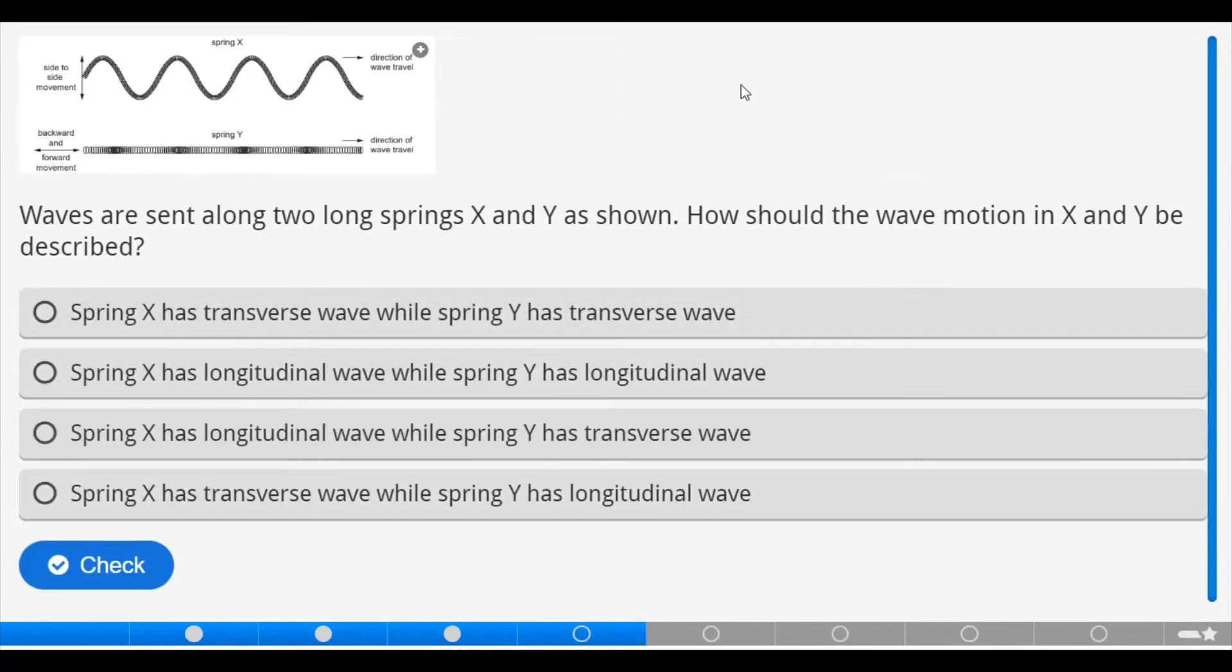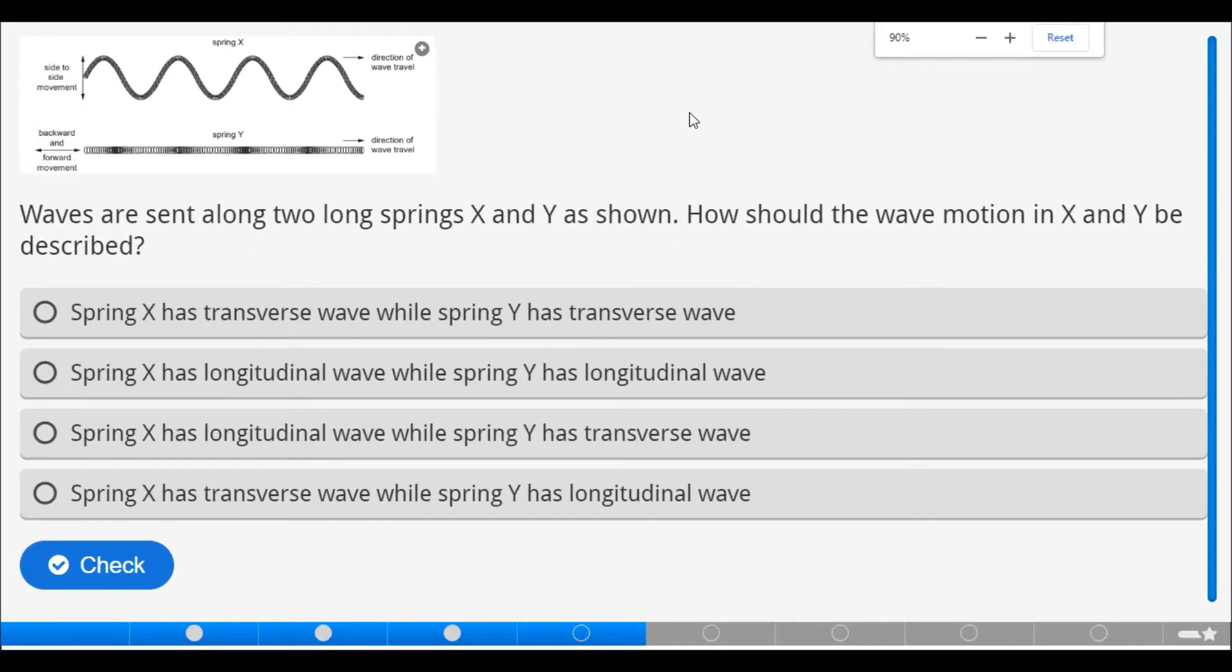Now, let's look at this question. If you look at the diagram, we have two types of diagram combined into one. We have spring X and we have spring Y. For spring Y, what type of wave do you think is passing through and for spring X? What type of wave do you think is passing through. So, let's use that to answer this question.